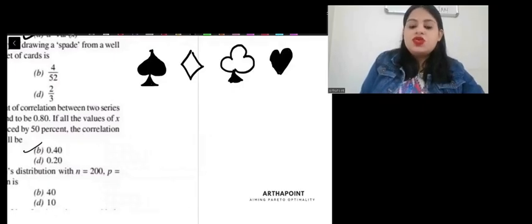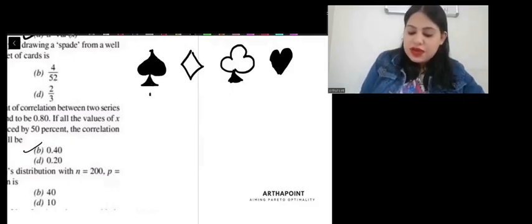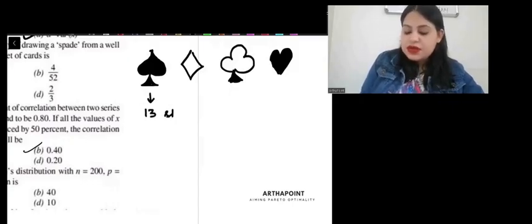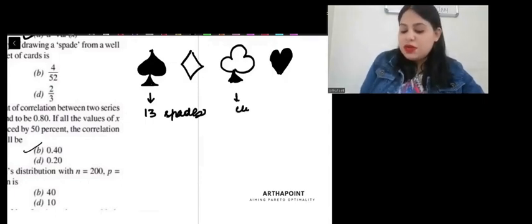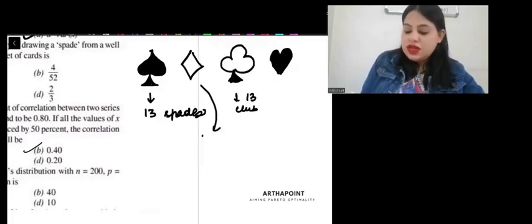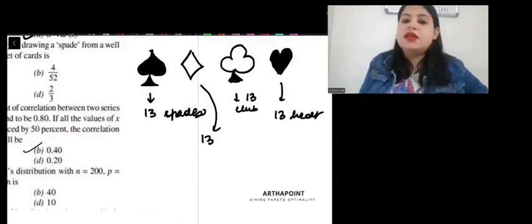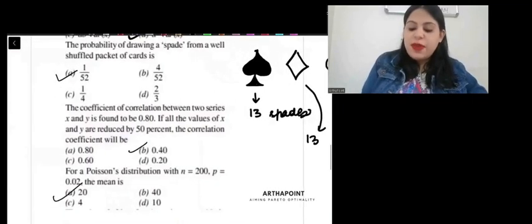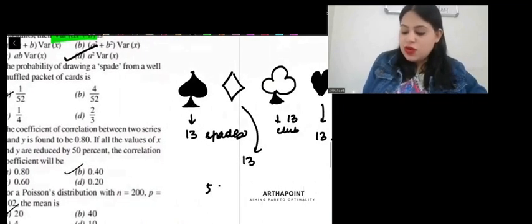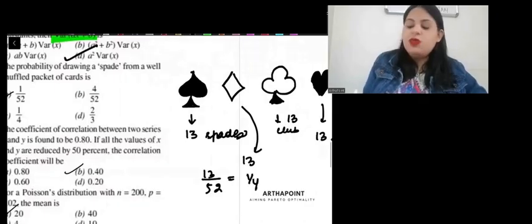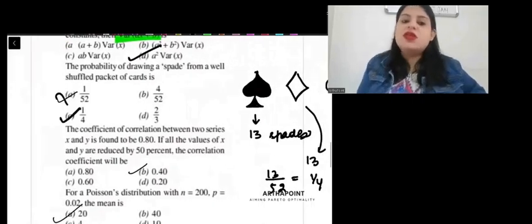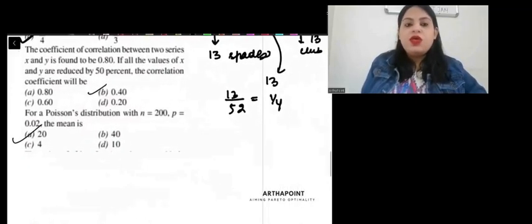You have four. And out of which, when we talk about spade, there are 13 spades. This is called club. There are 13 club. There are 13 diamond. And 13 heart. So, out of well-shuffled pack of cards, 52 cards total, and I have 13 spades. So, probability will be 1 by 4. So, answer to this question is c, 1 by 4.